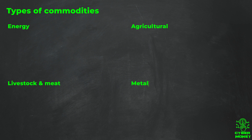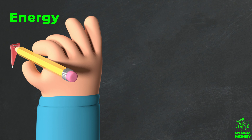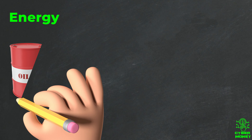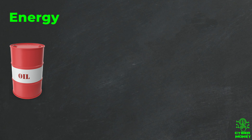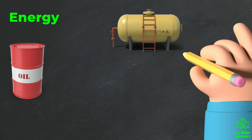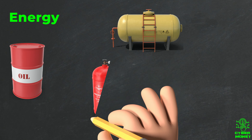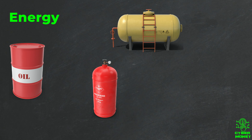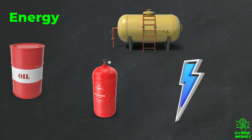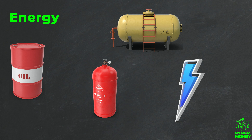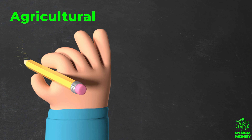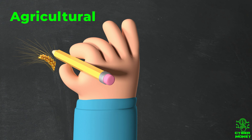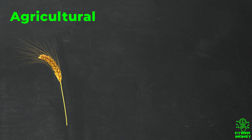Commodities are typically classified into four main categories. Energy: these include natural resources such as crude oil, natural gas, heating oil, and propane. They are used to generate electricity and fuel for vehicles, among other things.